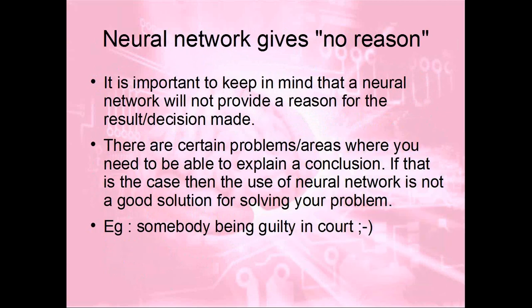This is a very important statement: when you have an outcome from a neural network, the network will say yes or no, this or that — but it will not give you a reason. It's sometimes difficult to know why it gives a particular answer. So if you need to know why for solving a problem, a neural network is not a good fit. You would go more into rule-based, where you can say because rule one, rule two, rule three are met, then do this.